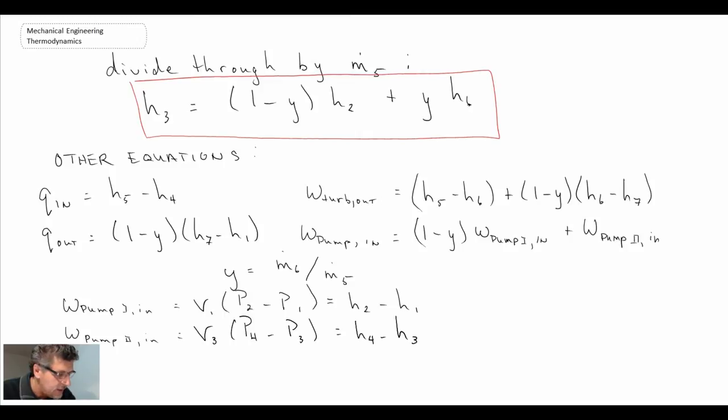So that is regenerative Rankine for the open feedwater heater. The next thing that we'll do is we will take a look at the closed feedwater heater and go through the same process. Look at the schematic and the process diagram, and then we'll look at the first law applied to that for a steady flow.